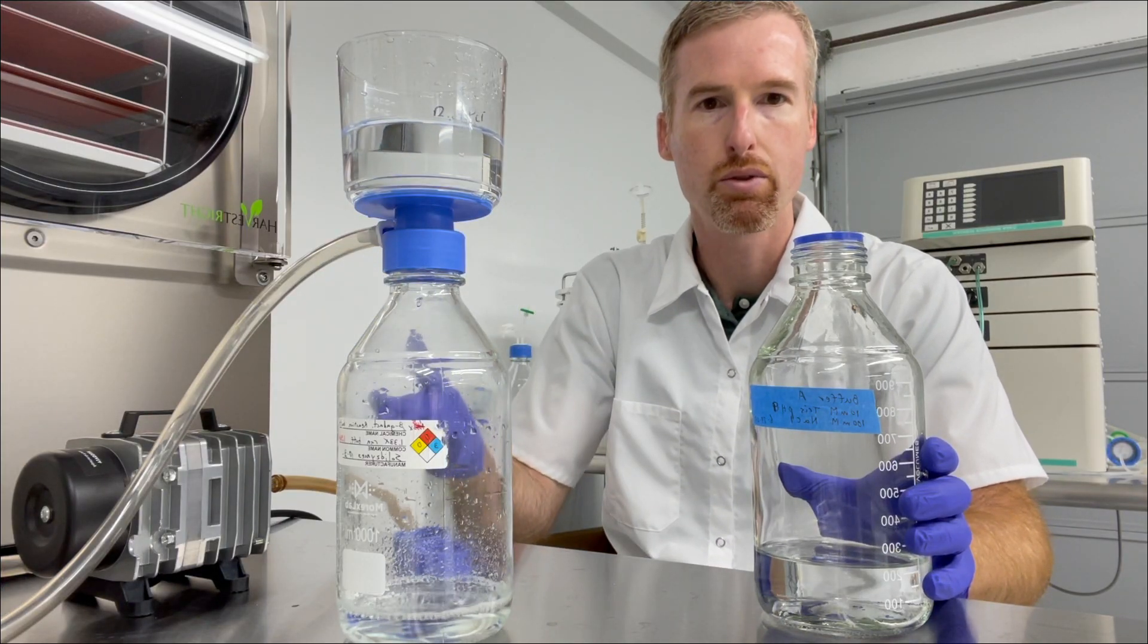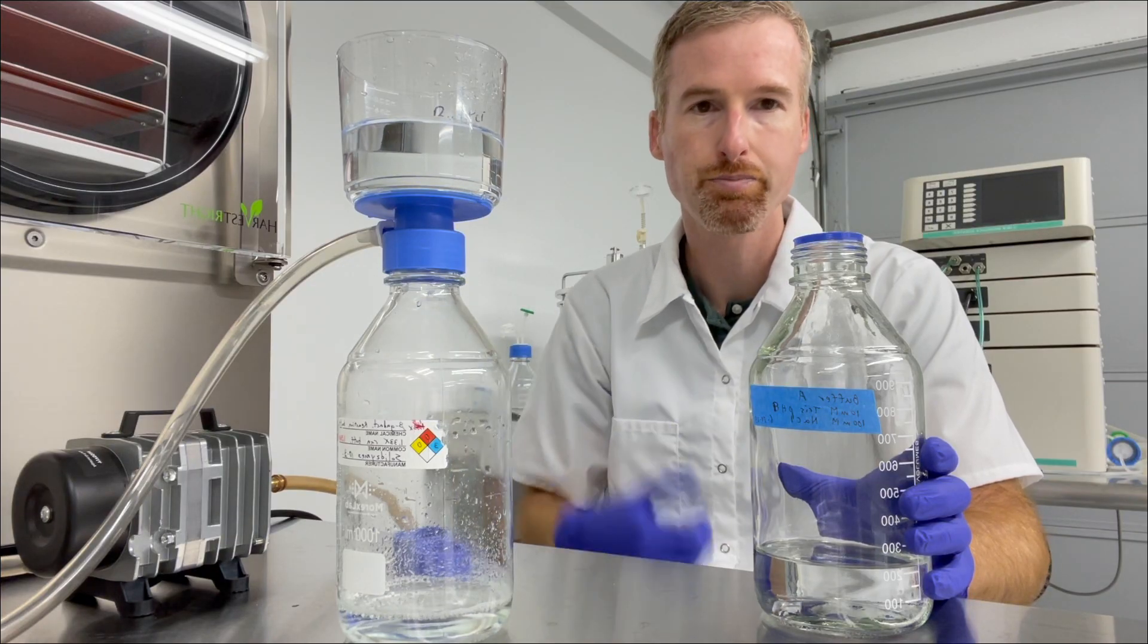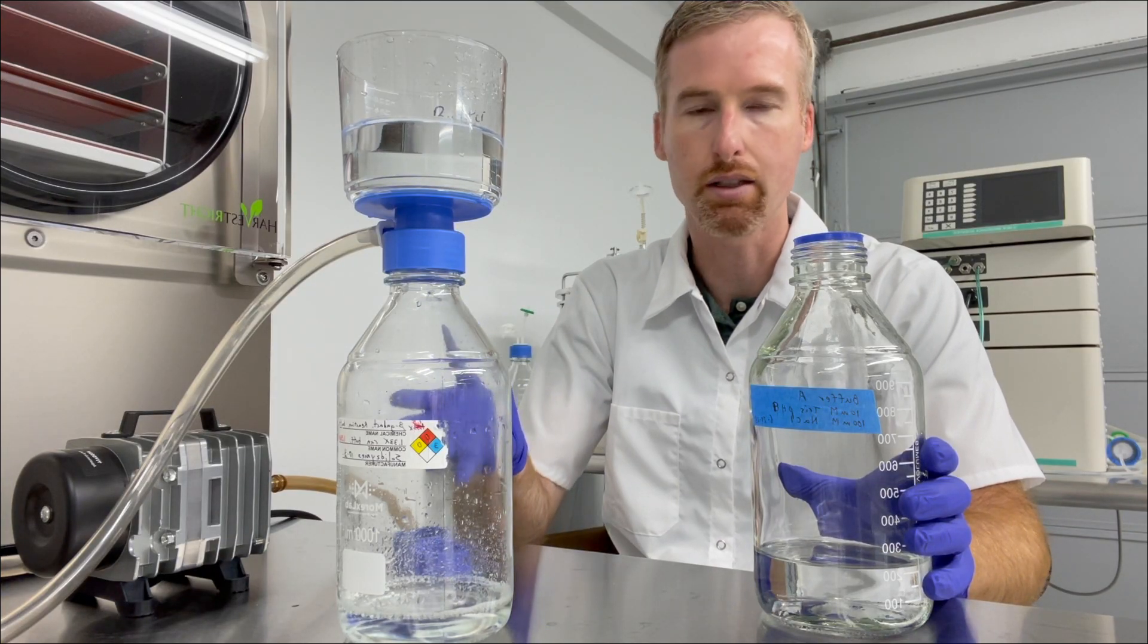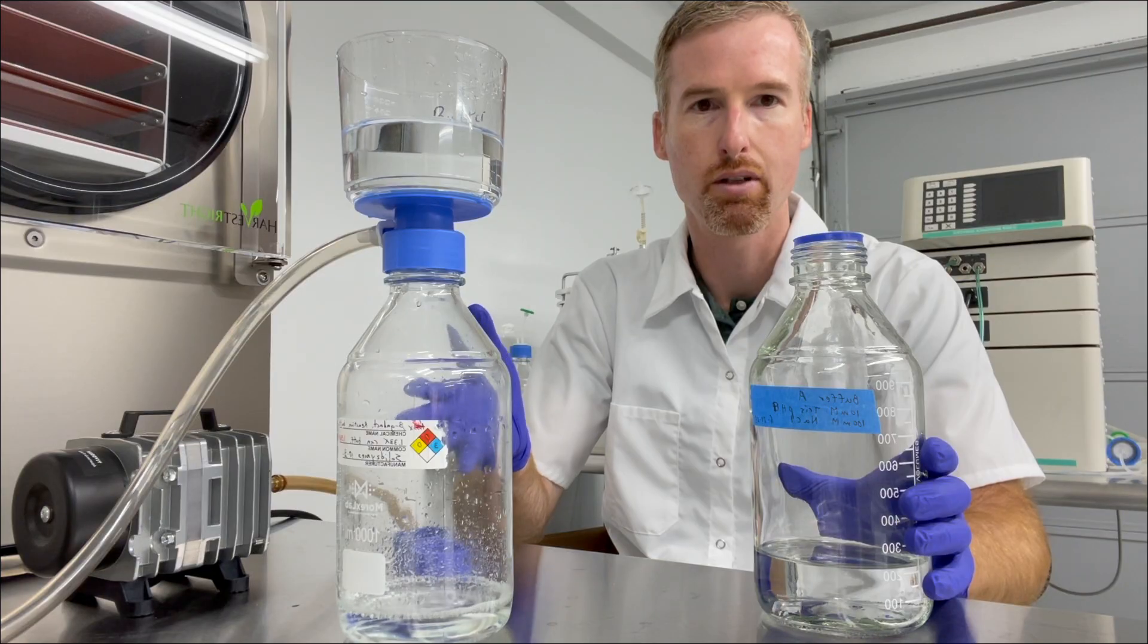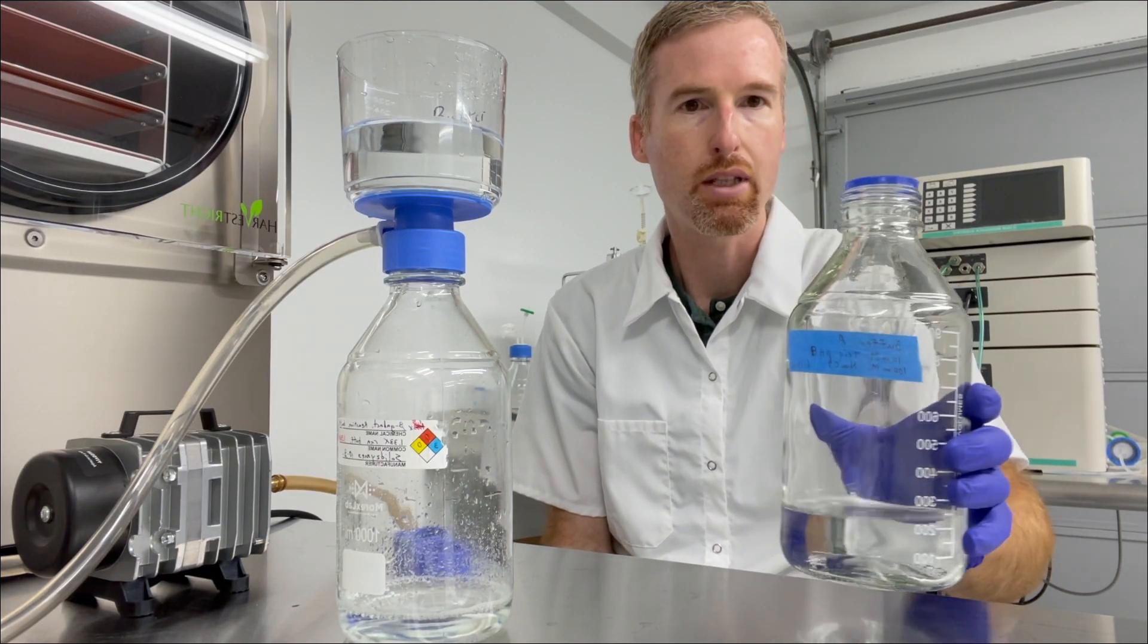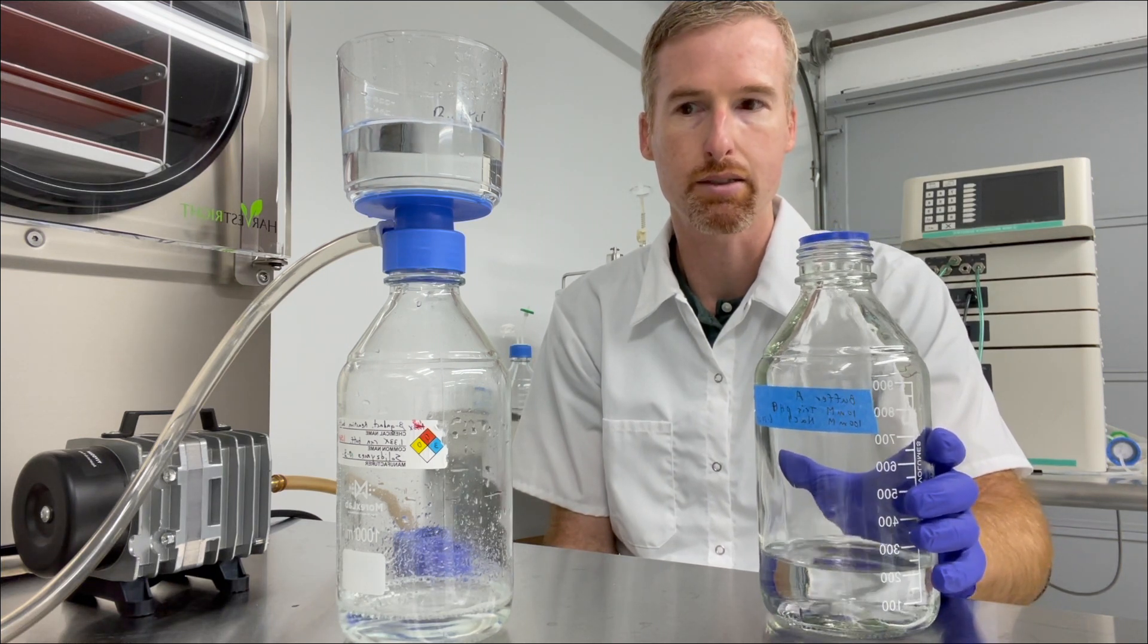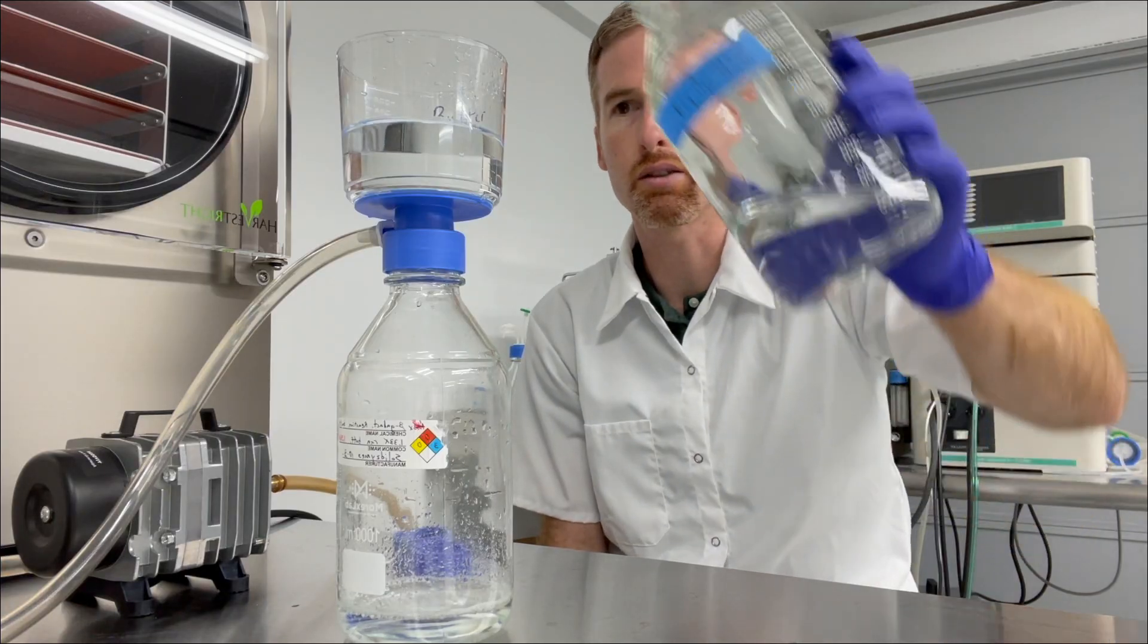Pull it through into this other bottle using the vacuum, collect the clean degassed buffer on the other side, and I'm just going to repeat that for buffer B and for water as well because I need water for the ACTA. So let's go ahead and see how this goes.